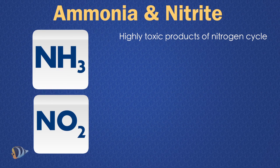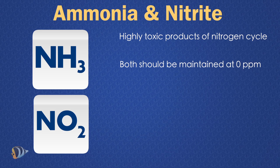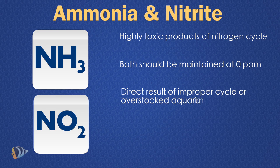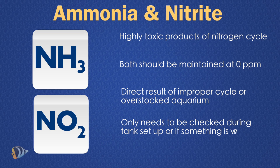Ammonia and nitrite are two of the basic waste parameters and are products of the metabolic processes of the nitrogen cycle. They are both extremely toxic to fish and corals and should never be present in your aquarium outside of the cycling process. If either is present in your aquarium it is the result of insufficient biological filtration or an overstocked aquarium. Testing these parameters is usually only necessary while cycling your aquarium, but it's not a bad idea to check monthly or when you suspect something may be wrong with your tank.